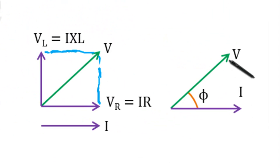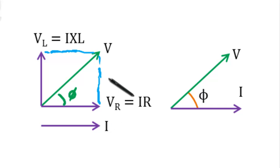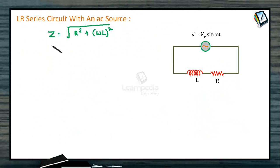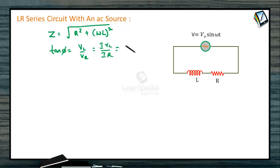From the phasor diagram we can calculate the value of tan φ, which is the phase angle. tan φ = VL/VR. Since VL = I·XL and VR = I·R, we get tan φ = XL/R = ωL/R. So we now know the value of tan φ.